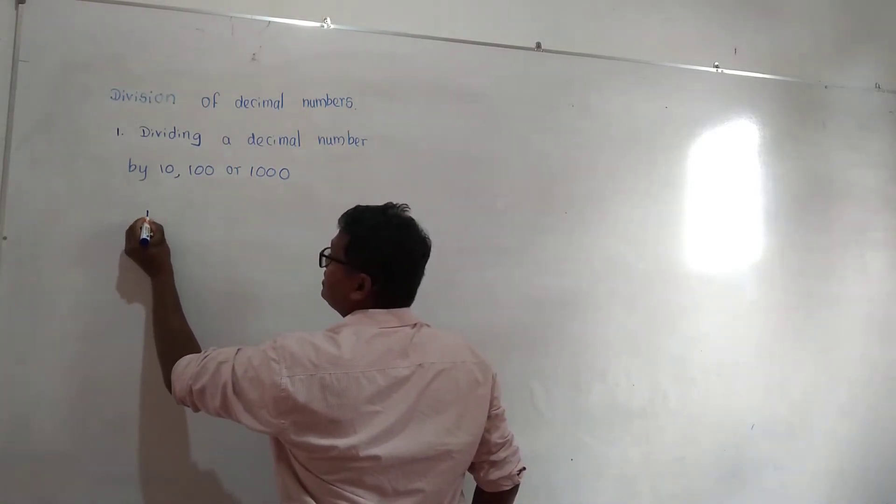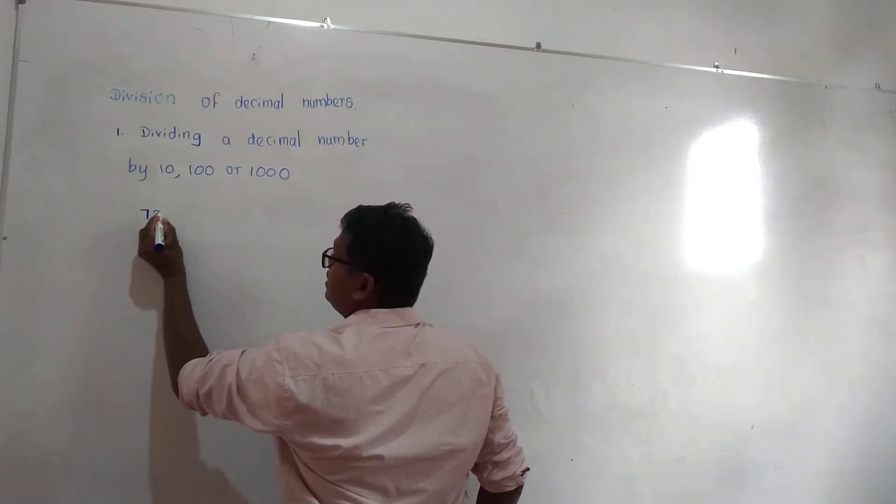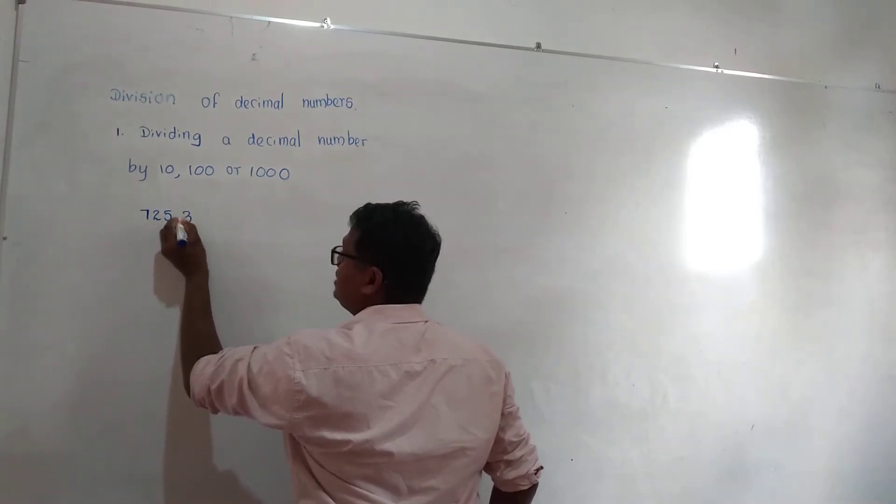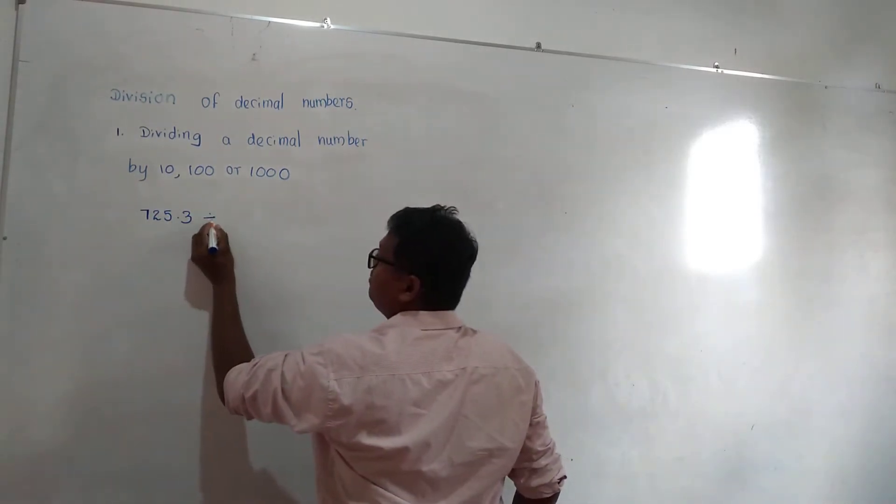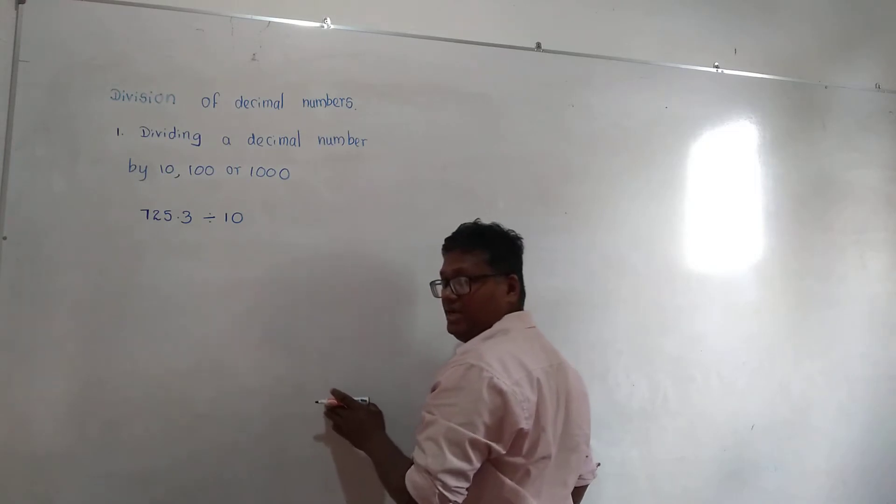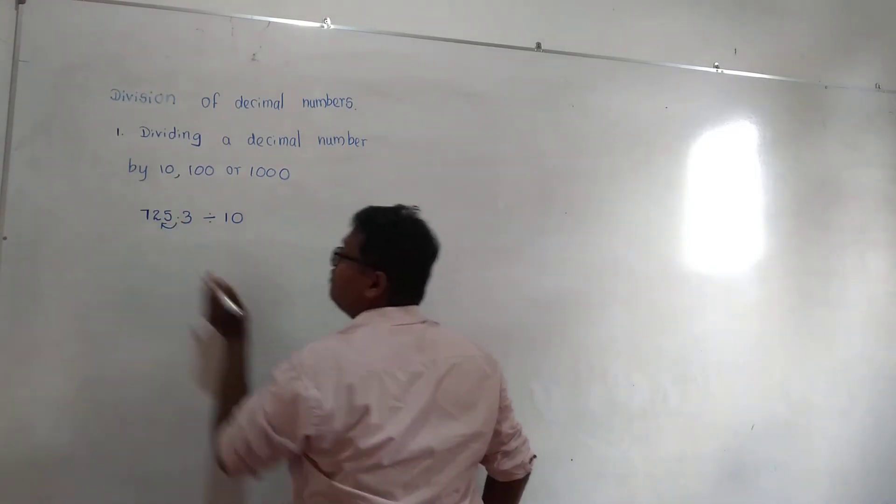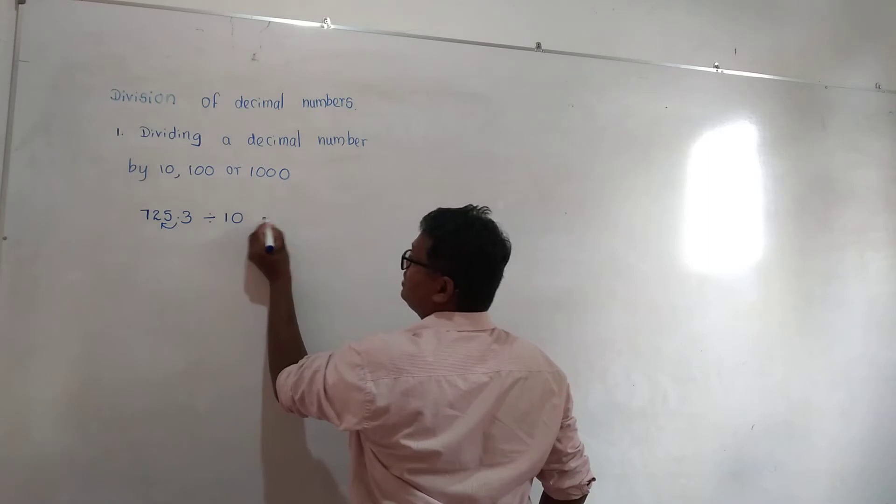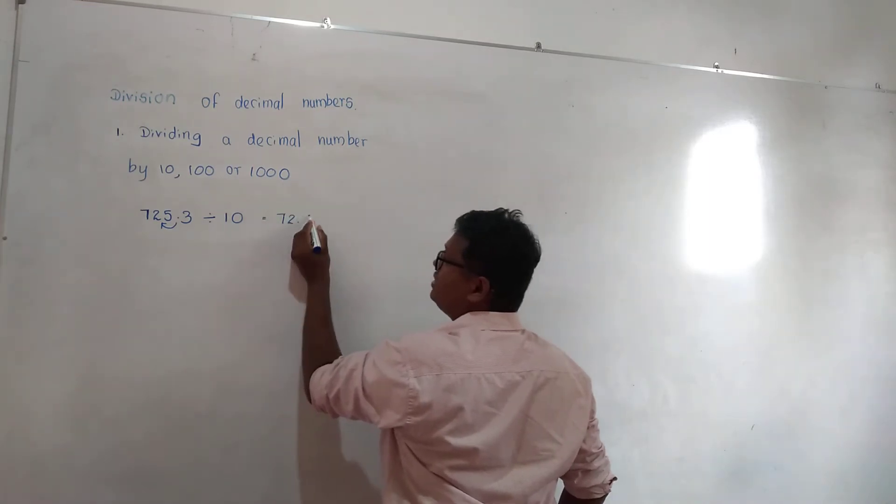That means 725.3 divided by 10. When I divide by 10, the decimal point will go forward once. Then 72.53.